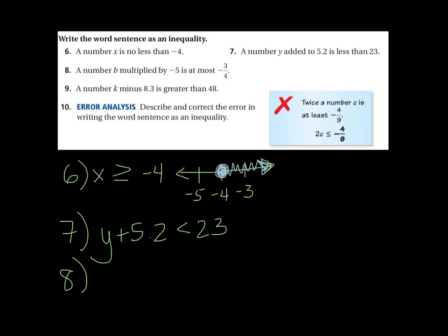Number 8. A number b multiplied by negative 5. Well, b multiplied by negative 5 we know is negative 5b. Is at most negative 3 fourths. At most. Well, could it be equal to negative 3 fourths? Yes. The most it can be is negative 3 fourths, so it can be equal. But if that's the most that it can be, it's really going to be what? Less. That's right, it's going to be less. So that's your inequality for number 8, which I am not going to make you graph either.